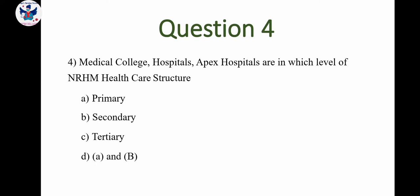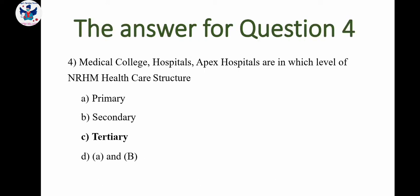Next question: Medical colleges, hospitals, and apex hospitals are at which level of the National Rural Health Mission healthcare structure? A: primary, B: secondary, C: tertiary, D: A and B. The correct answer is tertiary.